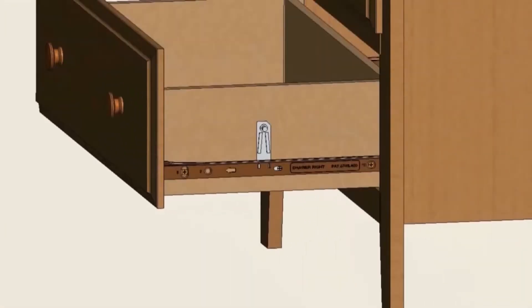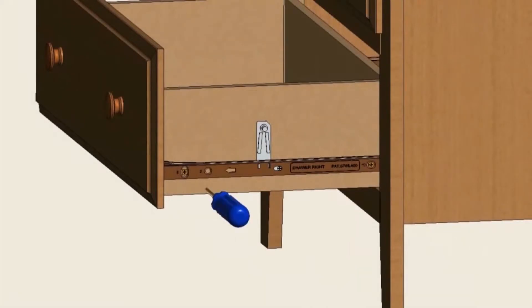First, locate the screw in the drawer slide that is closest to the drawer front. You will want to loosen the screw one quarter turn.